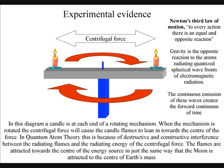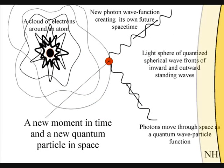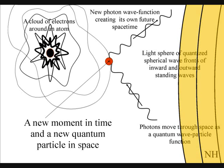The flames are attracted towards the center of the energy source, in just the same way that the moon is attracted to the center of mass of the earth. In quantum atom theory, the light spheres of electromagnetic radiation that create the gravitational fields holding the planets in motion around the sun are also the same light spheres that we have in quantum physics.